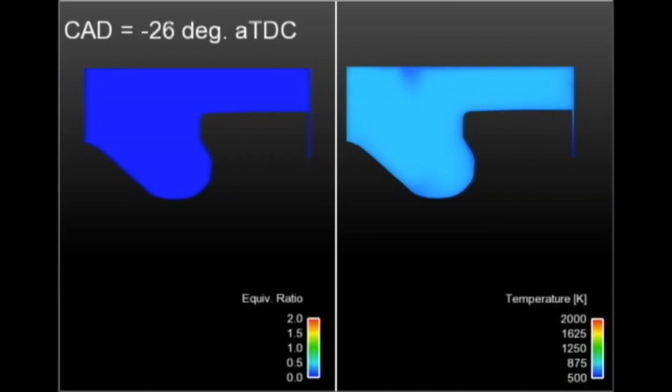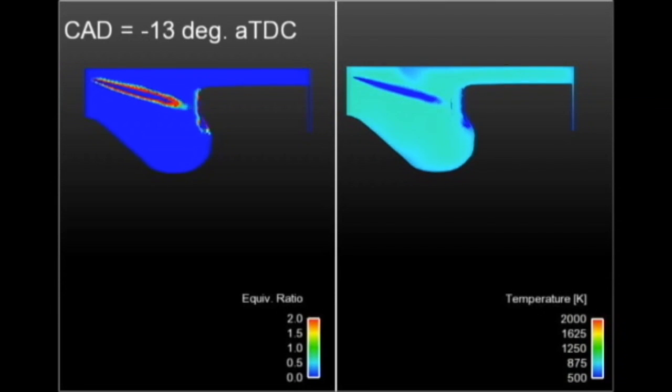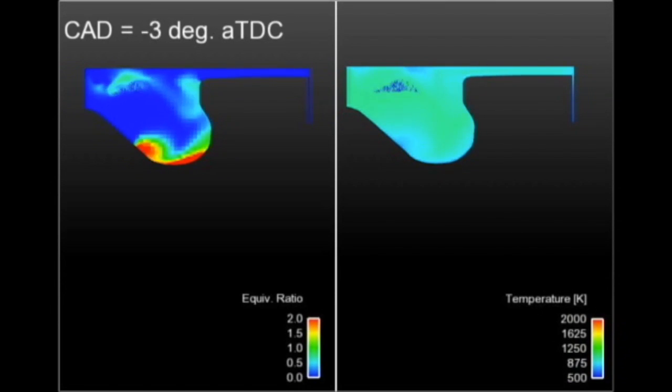Gasoline compression ignition is a low temperature combustion mode in which gasoline is combusted within a diesel engine purely through compression.